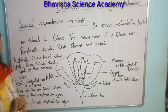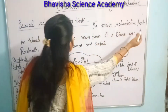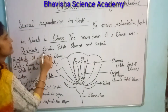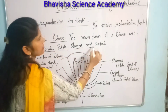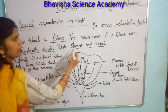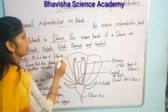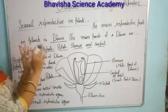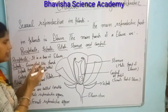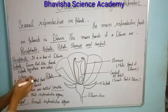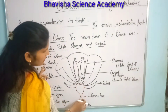The main reproductive part of a plant is the flower. The main parts of a flower are: receptacle, sepals, petals, stamens, and carpel. The colorful leaves of a flower are known as petals. When all the colorful leaves group together, that group is known as the corolla.